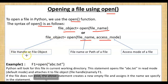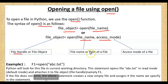The file object name is also called the file handle. The file name refers to where the file is saved. If the file is saved in Python's default directory, you simply give the file name. Otherwise, you have to give the complete path if it is located in a different position. Access mode specifies how you want to access the file.